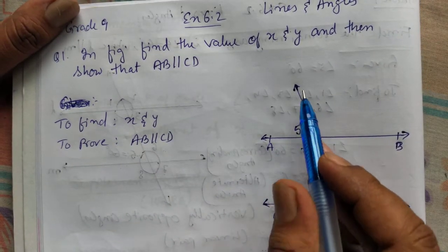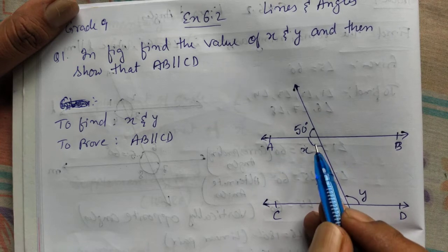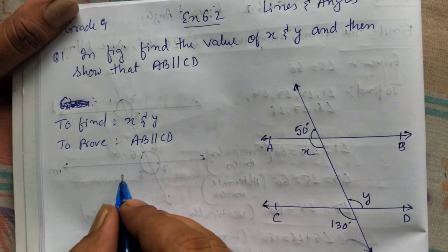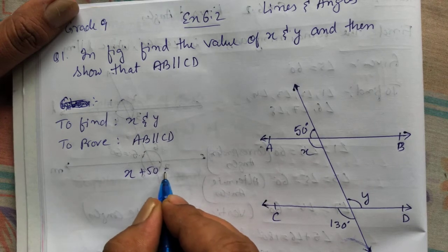See here. This is a straight line. In a straight line, if we add this two angle, x plus 50 will be equal to 180.